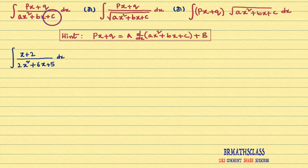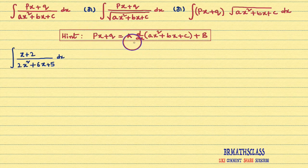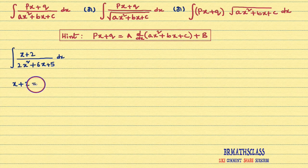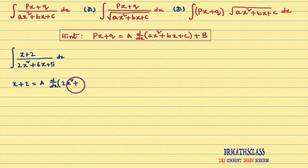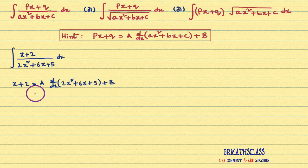How do we start the solution if the given problem is any one of these three forms? First, we write px+q as a into d/dx of (ax²+bx+c) plus b. In this problem, we write x+2 equal to a into d/dx of (2x²+6x+5) plus b.